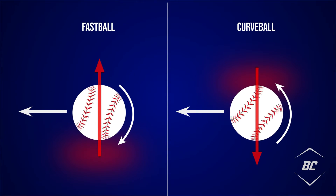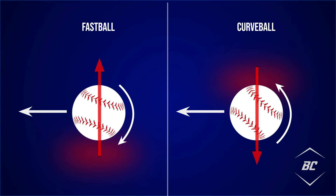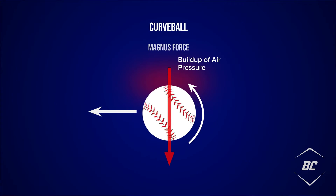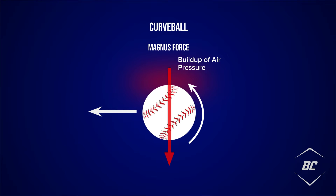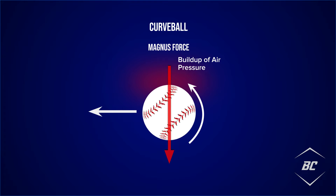When reviewing breaking pitches such as curveballs, we know they are released with topspin. This type of spin creates the exact opposite Magnus effect than fastball spin. The topspinning curveball creates more air pressure on top of the baseball as it travels toward the plate, magnifying the gravitational forces already acting on the ball. For this reason, curveballs move or break in a sharp downward path compared to fastballs.